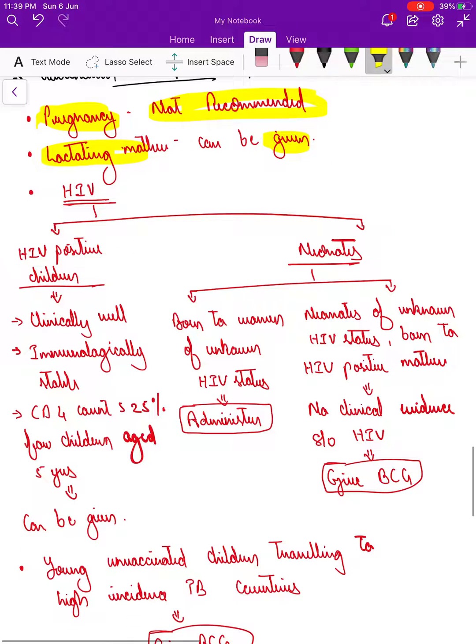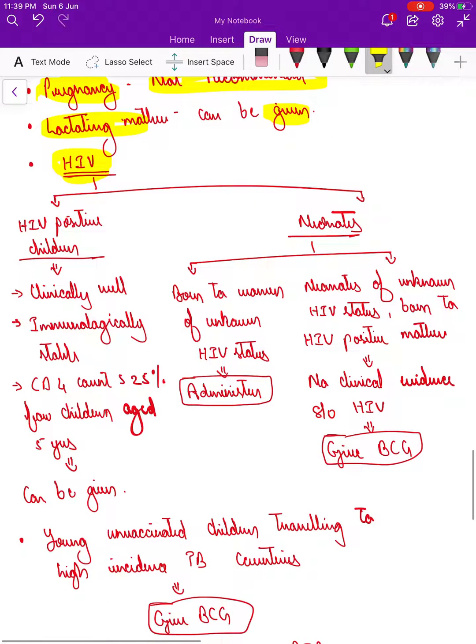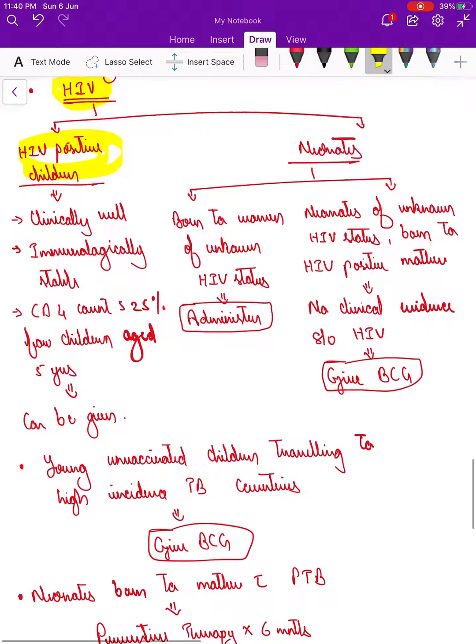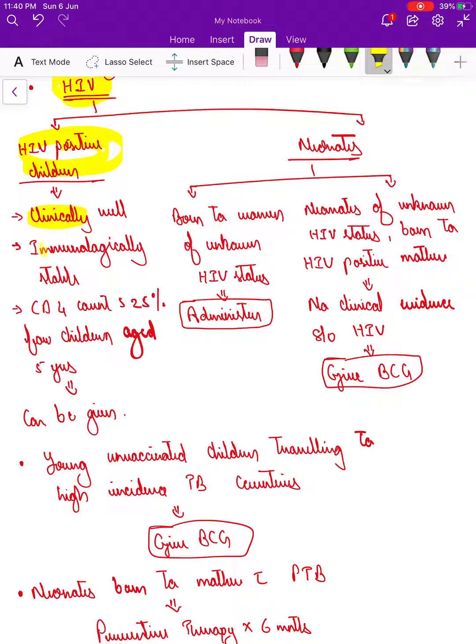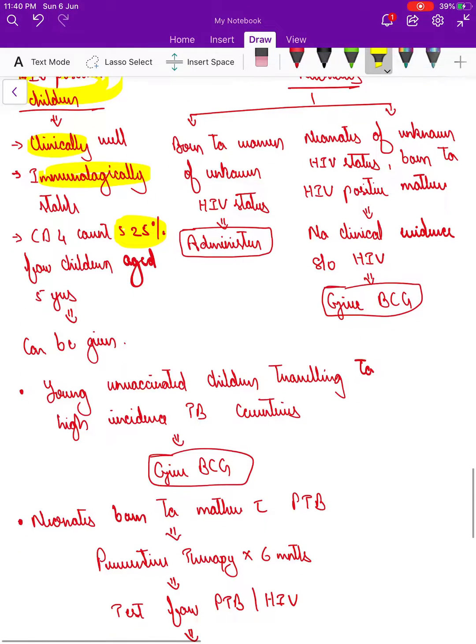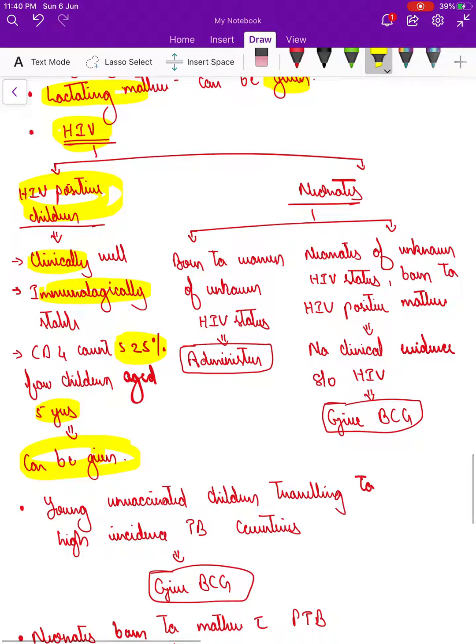When it comes to HIV, if the child has HIV positive status, do we vaccinate? Only if the child is clinically well, immunologically stable, and CD4 counts are greater than 25 percent for children aged above 5 years. In HIV positive children, this is the condition if they have to be vaccinated.